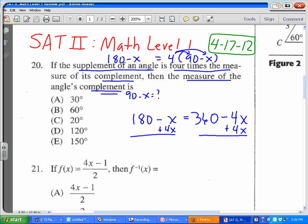And at the same time, we could subtract 180 on both sides. And when we do that, we're going to have that 3x is equal to 180.